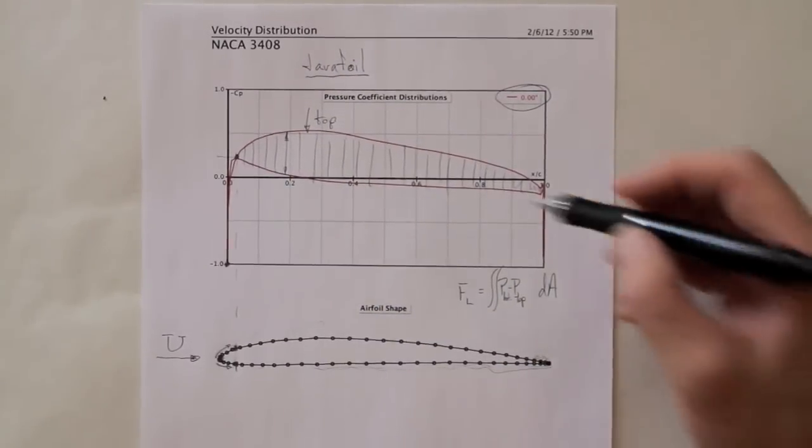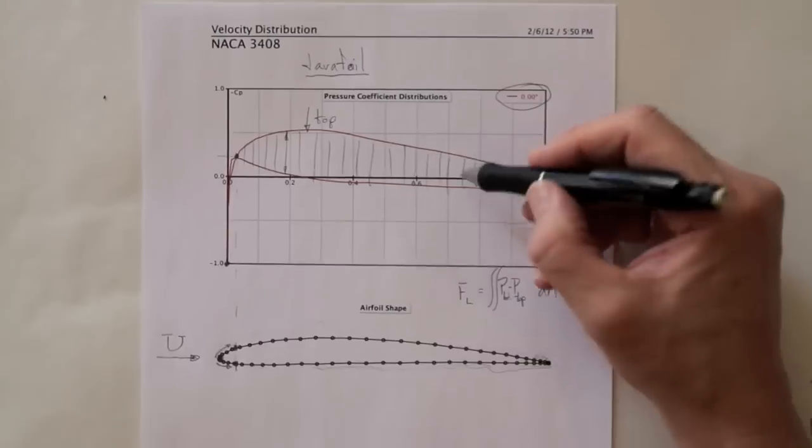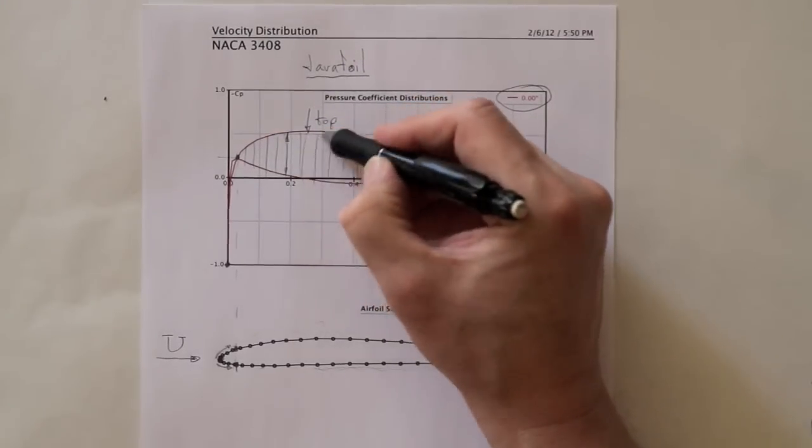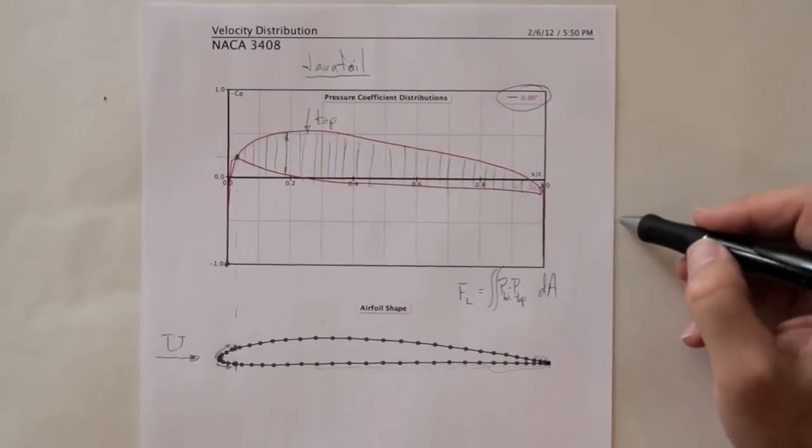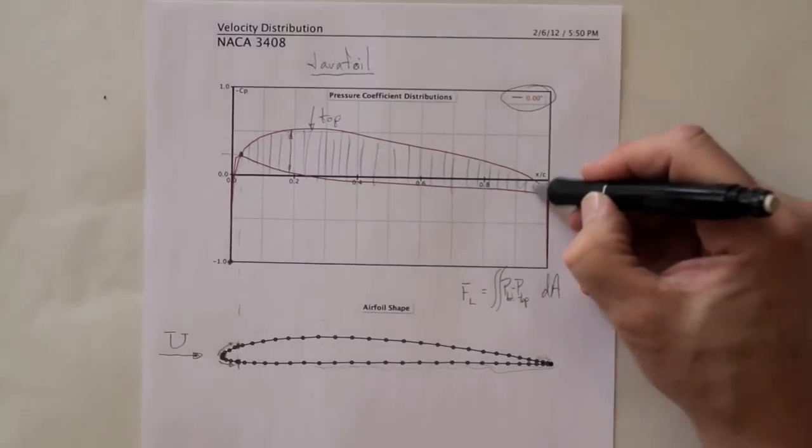However, one thing you'll notice is that the distance between these two curves is considerably bigger at the front part of the wing than it is at the back part of the wing.